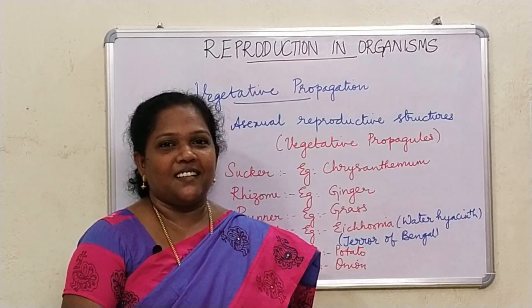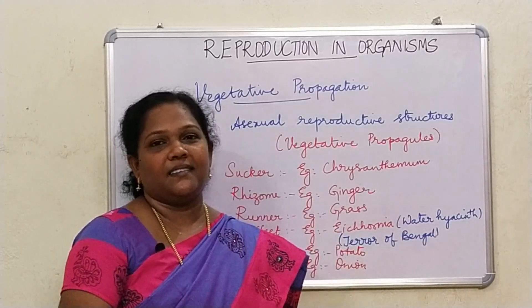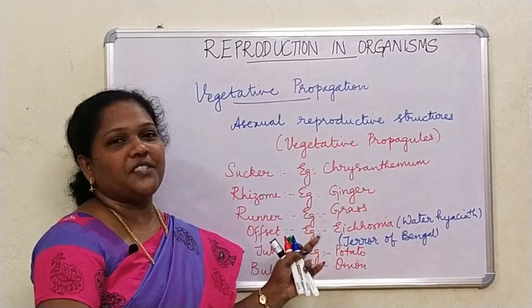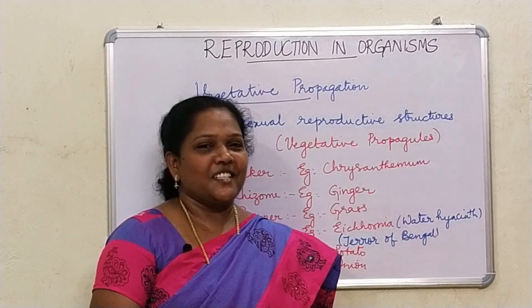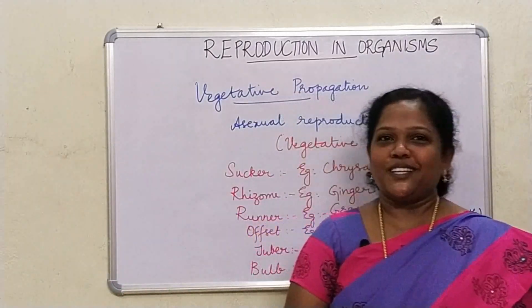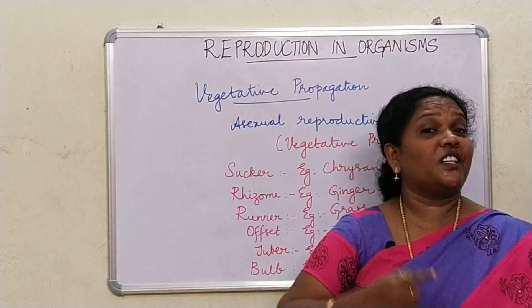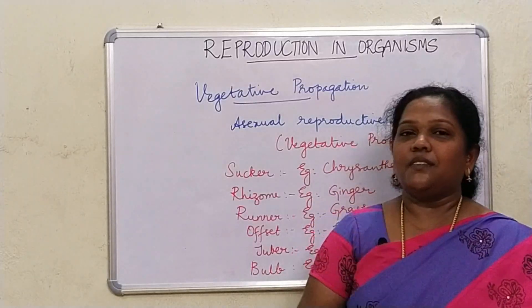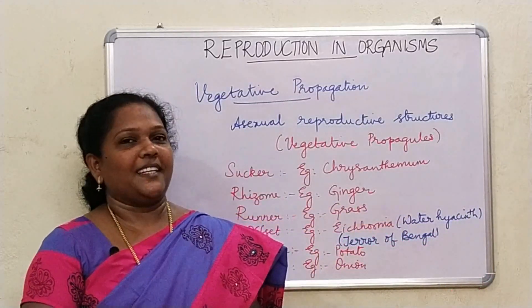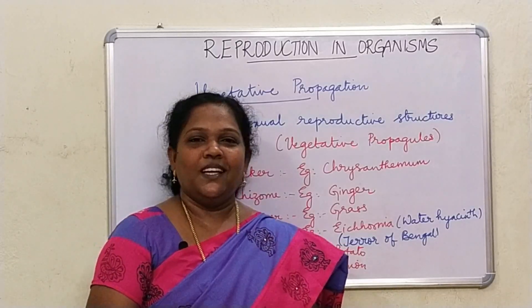To summarize: in asexual reproduction, only one parent is involved, the offspring look exactly like the parent, and there is no gamete formation. Reproduction is a biological process in which an organism produces its offspring, similar to itself, and it enables the continuity of the species from one generation to the other. We also learned about lifespan — the period from birth to the natural death of an organism — and the difference between sexual and asexual reproduction.